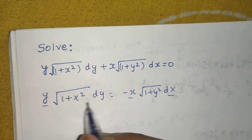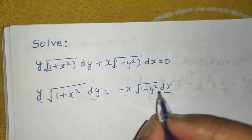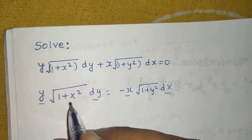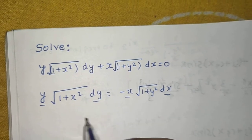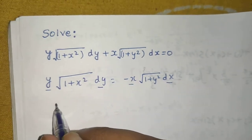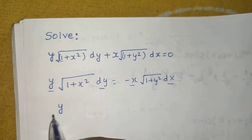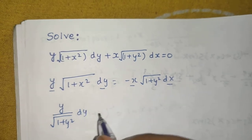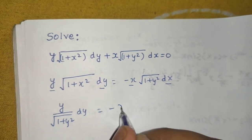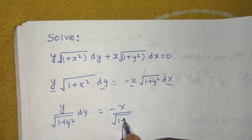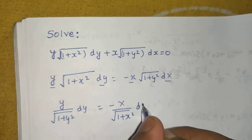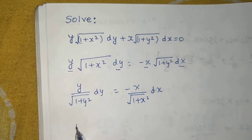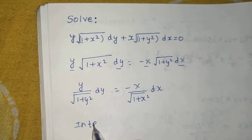Now bring √(1+y²) to the LHS and send √(1+x²) to the RHS. So y divided by √(1+y²) dy equals minus x divided by √(1+x²) dx. Now integrate both sides as usual.